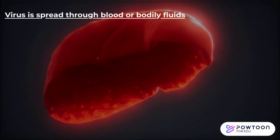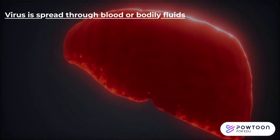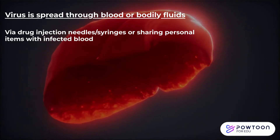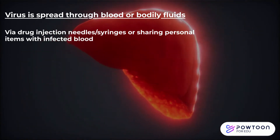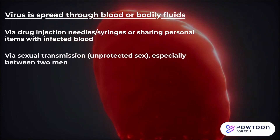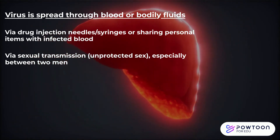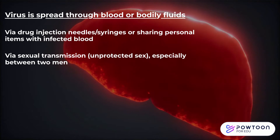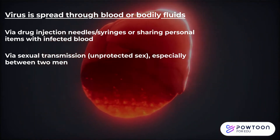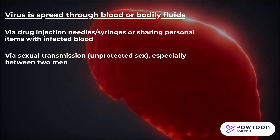The virus can be transmitted through blood or bodily fluids. This includes sharing drug injection needles or syringes that are infected with blood containing the hepatitis C virus. Another method of transmission is through unprotected sex with an infected individual, most common between men who have sex with men, as anal intercourse carries a relatively high potential for blood exposure compared to vaginal intercourse.